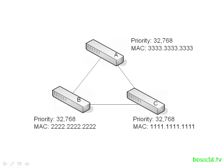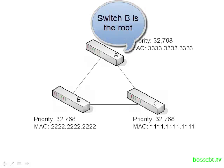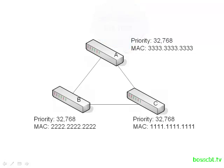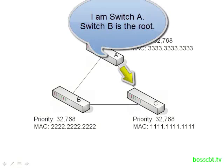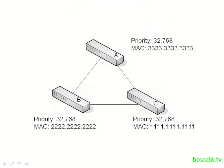Switch A would say it has received superior information from switch B and now knows that switch B is the root bridge. From that point on, all the BPDUs that switch A sends out will still have the source Bridge ID of switch A, but instead of listing itself as the root bridge, it will now list switch B. This process will keep happening between each of the switches on the network until an ultimate winner is found — this is pretty much the process of elimination.